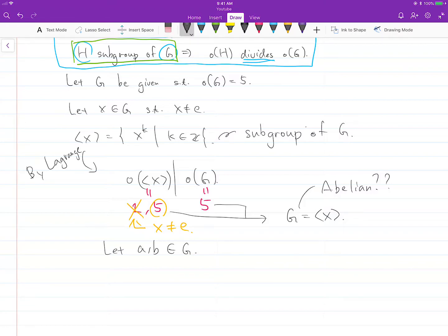Since G can be represented as the cyclic group generated by X, A equals X to the M and B equals X to the N for some integers M and N.